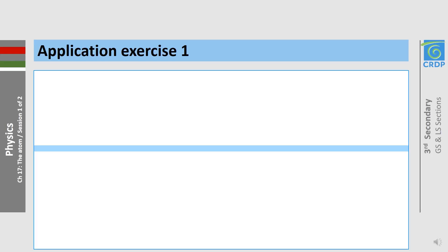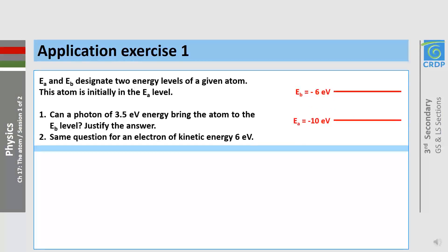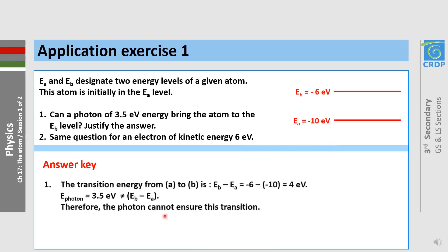Let's do an exercise for a better understanding. EA and EB designate two energy levels of a given atom. This atom is initially in the EA level. First question: can a photon of 3.5 electron volt energy bring the atom to the EB level? Second question: same for an electron of kinetic energy 6 electron volt. To answer this, we should calculate the transition energy between EA and EB, which is equal to EB minus EA.